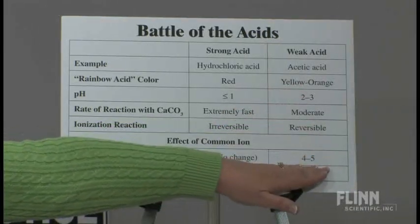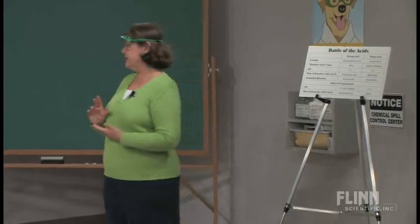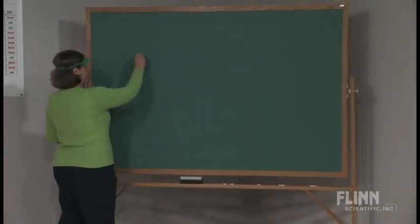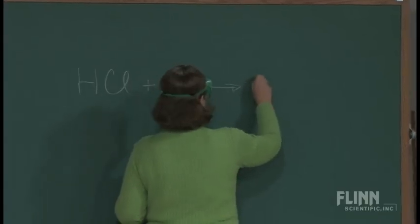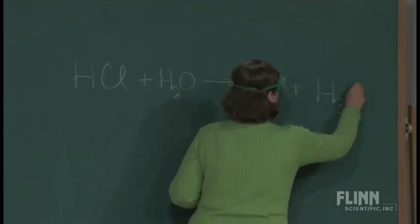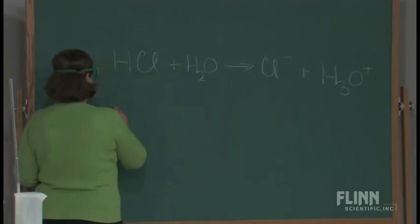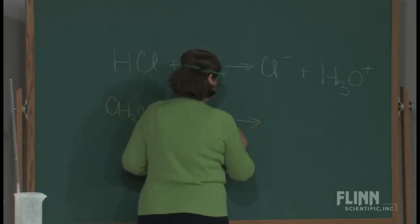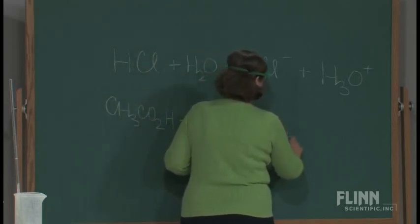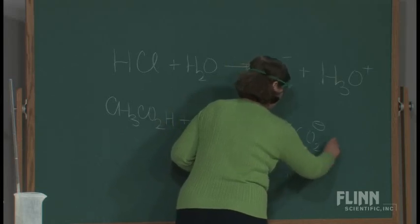When we added the common ion acetate to the acetic acid, it increased the pH to between 4 and 5, and gave a slower — though still observable — reaction with the calcium carbonate. Looking at the dissociation reactions at the board: HCl in H₂O produces Cl⁻ and H⁺ (or H₃O⁺). For acetic acid, CH₃CO₂H + H₂O, we write a reversible reaction to form the acetate ion CH₃CO₂⁻ plus H₃O⁺.